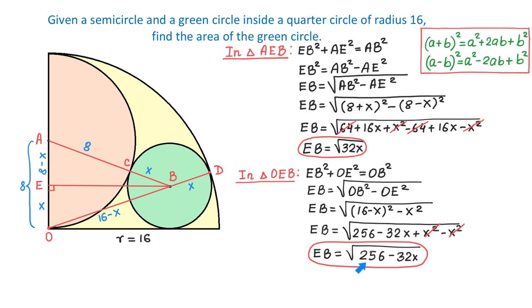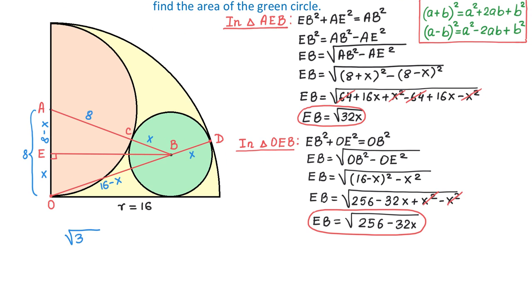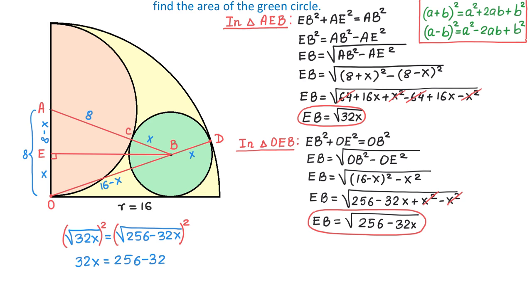Here we have another expression that also represents EB. Because both expressions represent the same side EB, we set them equal and solve for x: the square root of 32x equals the square root of 256 minus 32x. Raising both sides to the second power gives 32x equals 256 minus 32x. Adding 32x to both sides: 64x equals 256. Dividing both sides by 64, we get x equals 4.